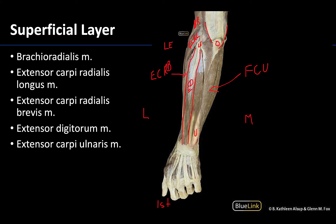Medial to the extensor digitorum is the extensor carpi ulnaris, which sits very close to the ulnar bone as you might imagine, and it plays a role in extending the wrist. So from lateral to medial the superficial layer order is: brachioradialis, extensor carpi radialis longus, extensor carpi radialis brevis, extensor digitorum, and extensor carpi ulnaris.